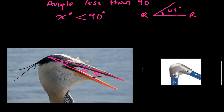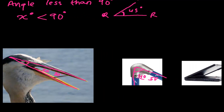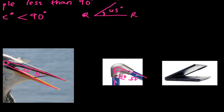Another example is the joint of a pipe. Suppose this is one straight line and another straight line, both connecting here. This is an acute angle — it may be around 40 or 50 degrees. I'm giving a rough idea, but it is less than 90 degrees, which is why it is an acute angle.